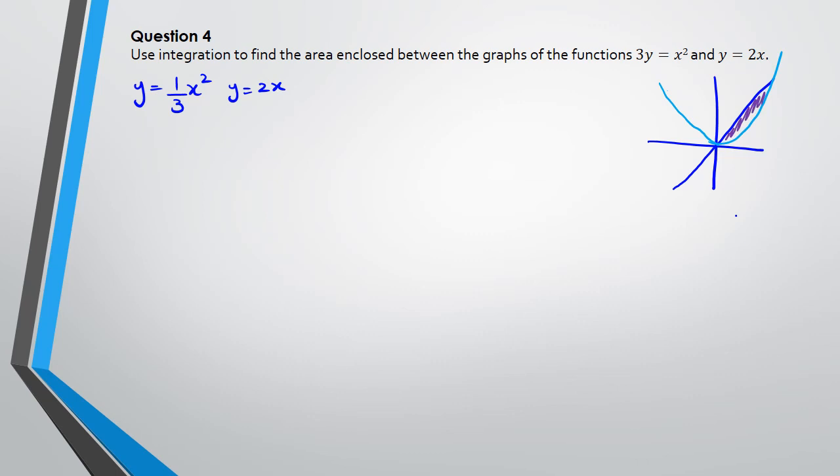So because we have y equals one third x squared and y equals 2x, we can put them equal to each other and start rearranging and solving. So we're going to get x squared equals 6x, and so we can say x squared minus 6x equals 0. Factorizing this we have x multiplied by x minus 6 equals 0, and so we can say that x is equal to 0 or positive 6. So that's where the points are actually intersecting - at 0 and at 6.